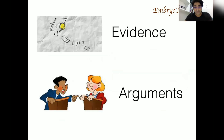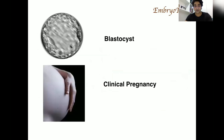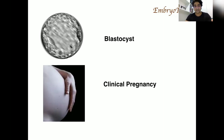There is always a debate about which kind of media is better — single step or sequential. Some say single step is better because there is less interference, while others say sequential is better because it is more physiological. For any IVF lab, the two most important metrics are the blastocyst rate and the clinical pregnancy rate or live birth rate. Let's look at the evidence regarding these two outcomes.